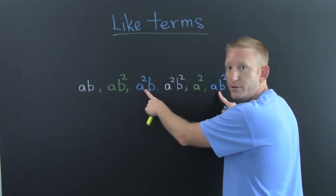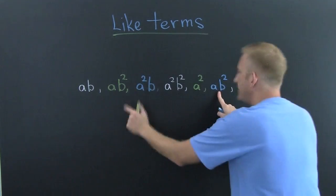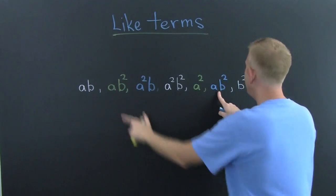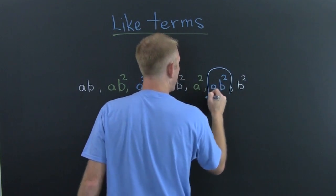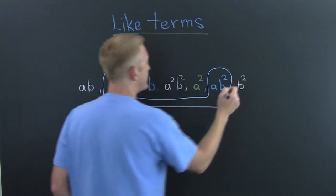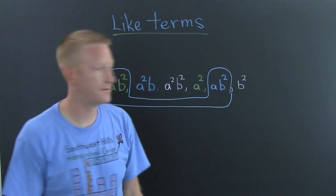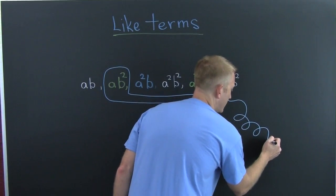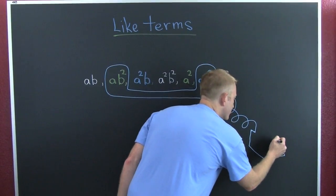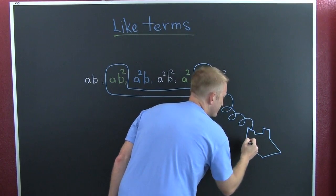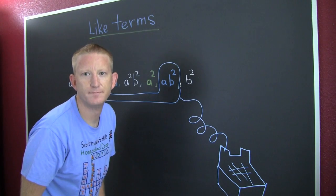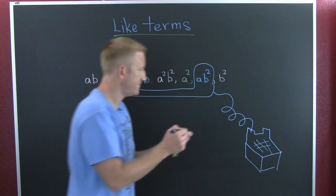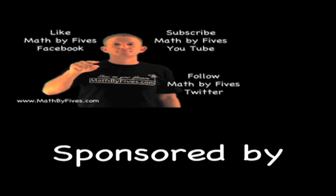Are these alike? They're both blue, but they're not alike. These two right here — that's an AB squared, and that's an AB squared. So indeed, these two are alike. Yes! Hot dog. That last one was off the hook — AB squared.